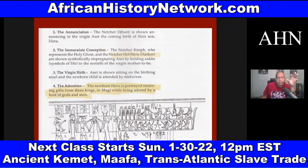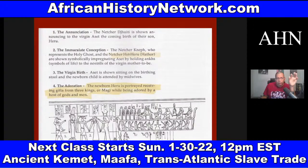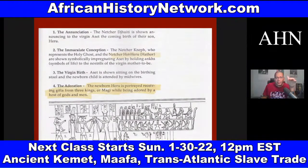Aset is shown sitting on the birthing stool, and the newborn Heru is portrayed receiving gifts from the three kings or Magi while being adored by a host of gods and men.